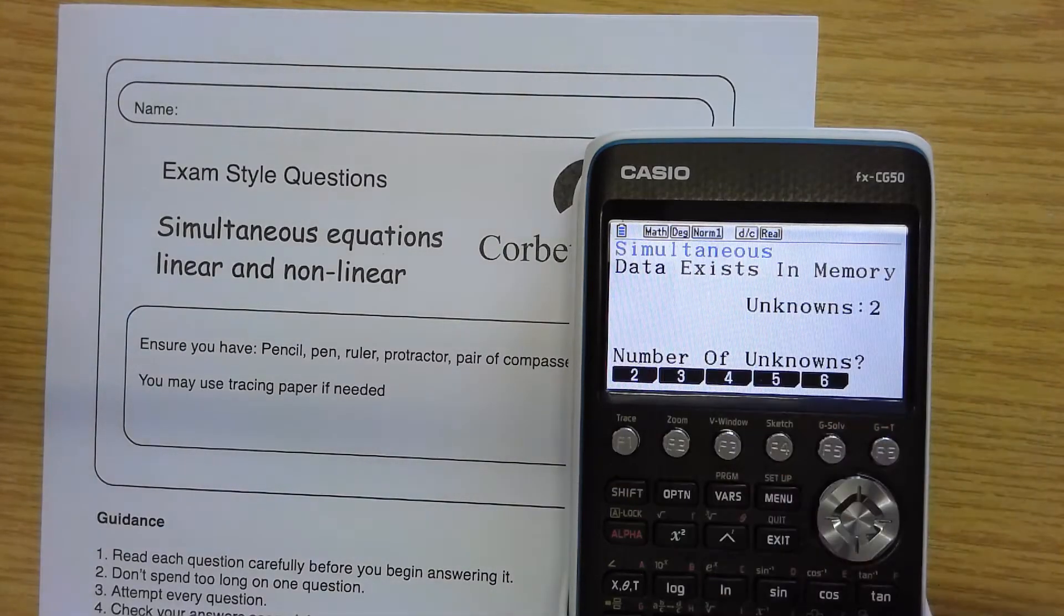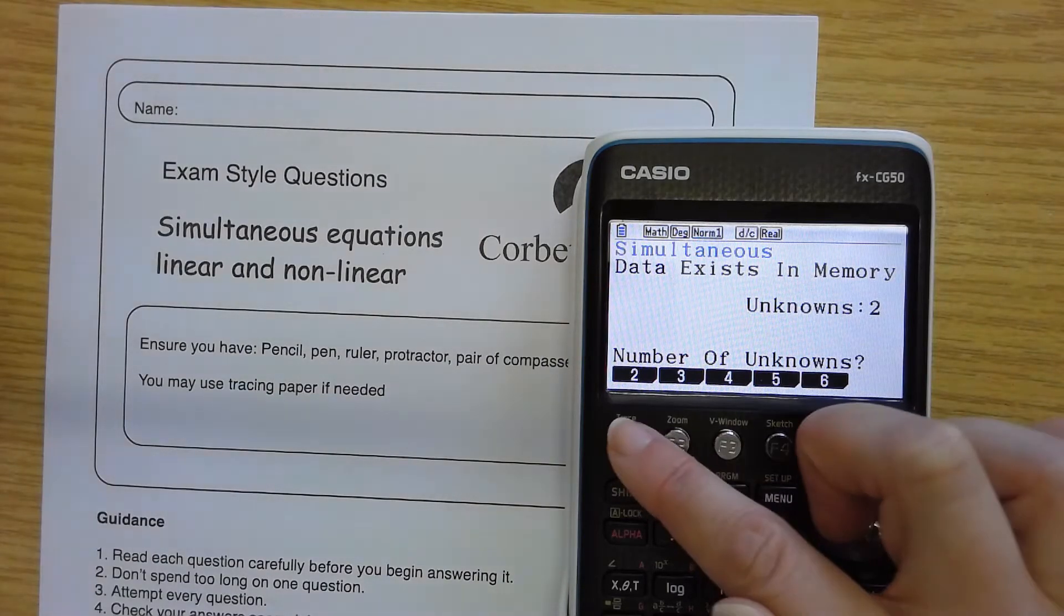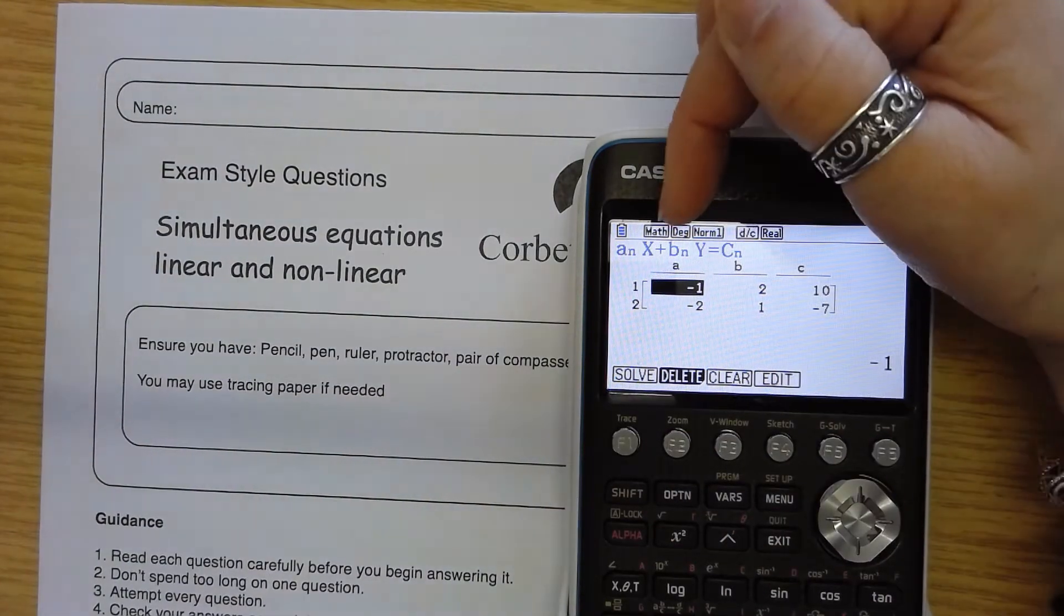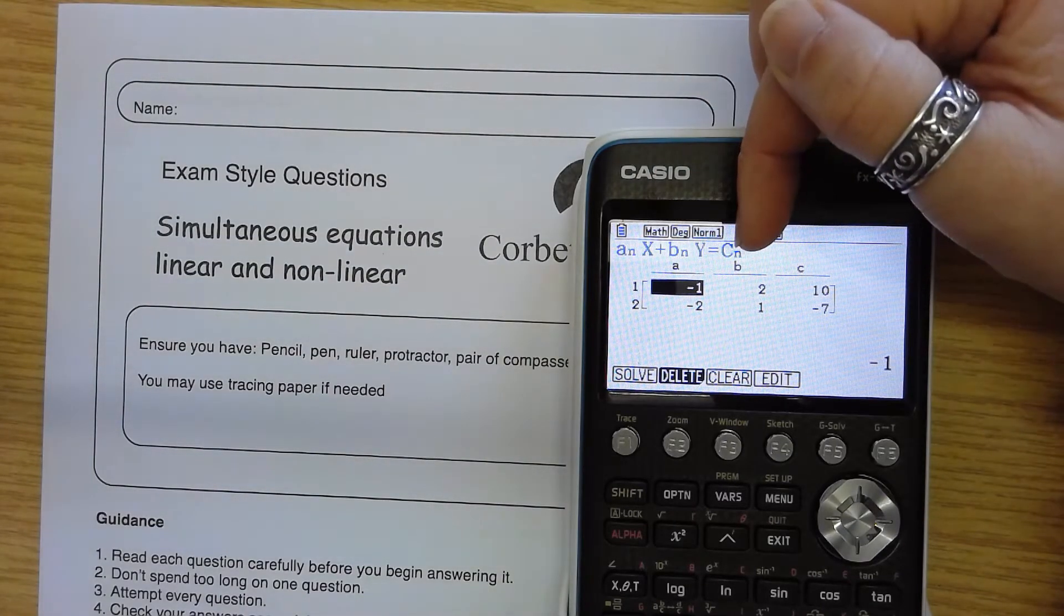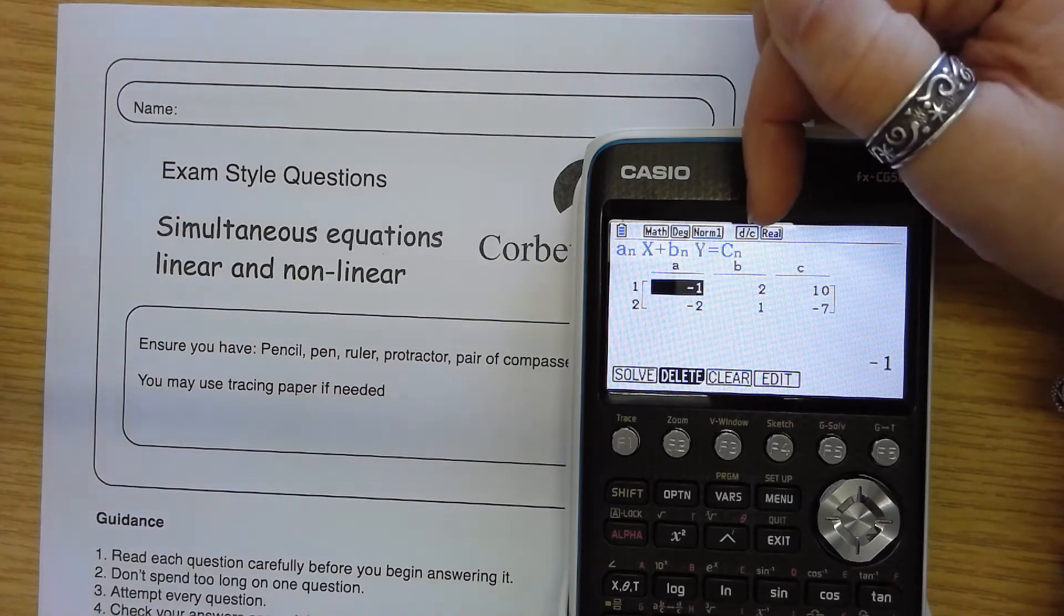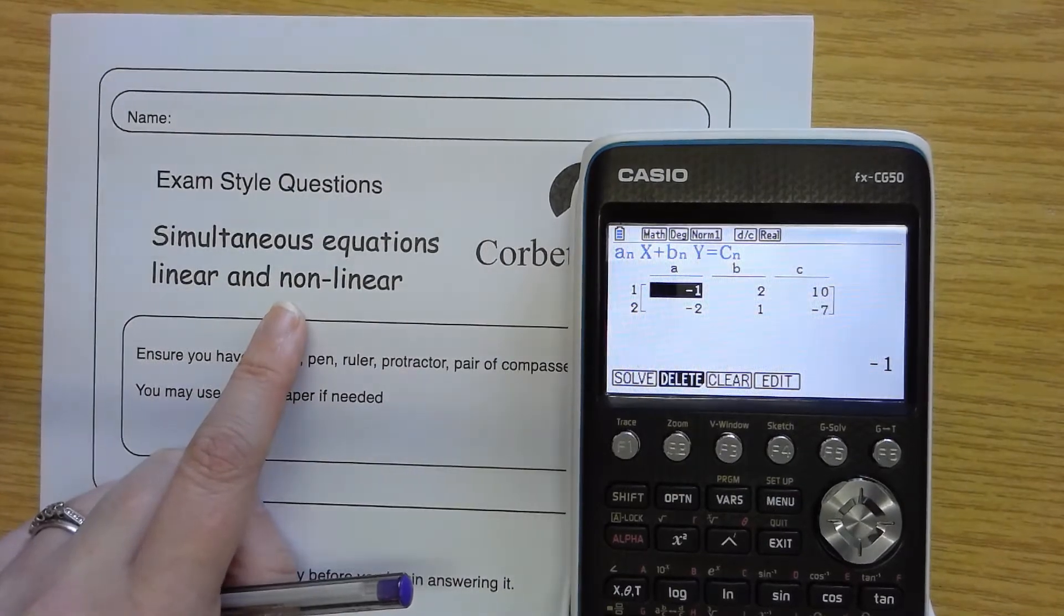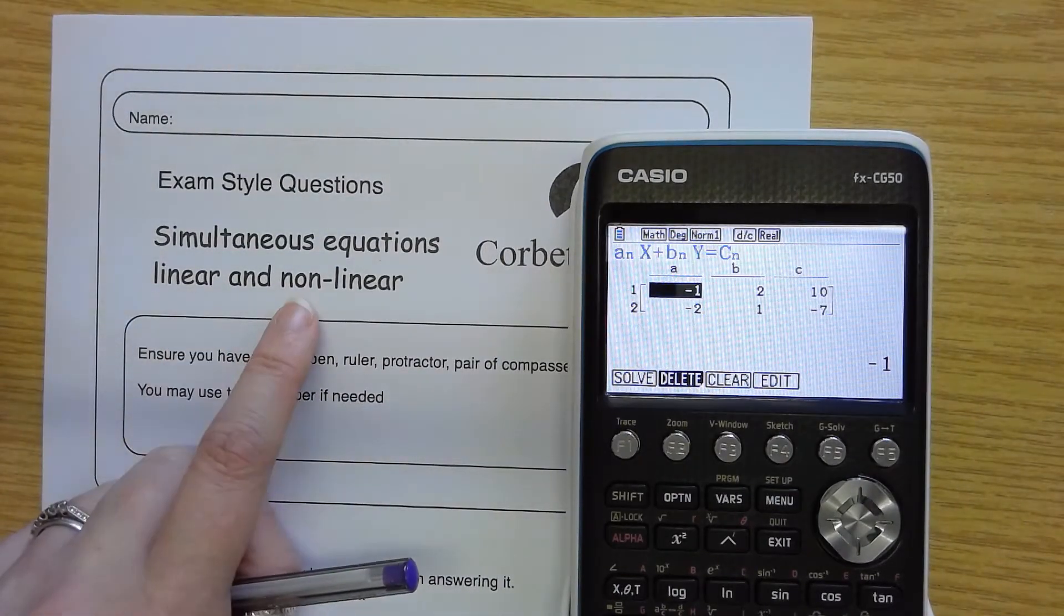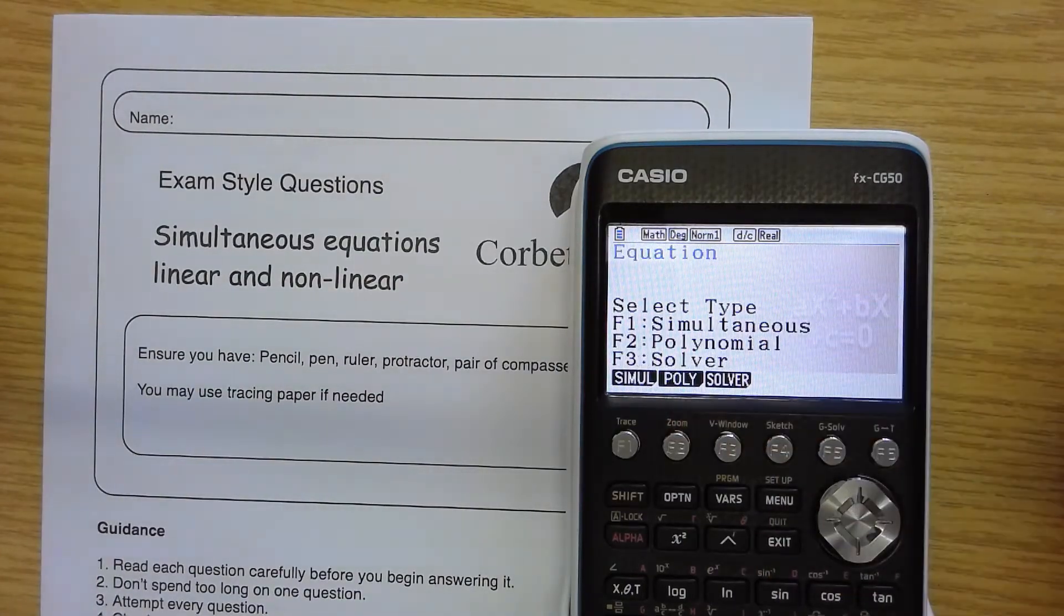If I select simultaneous equations here, 2, 3, 4, 5 or 6 unknowns, 2 unknowns is usually what we do predominantly at GCSE. It has x plus y equals a number. These are always linear equations. So it makes it a little bit more complicated for simultaneous equations that are linear and non-linear. We can't use this option to do that.